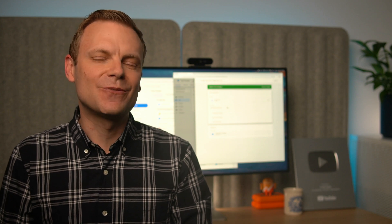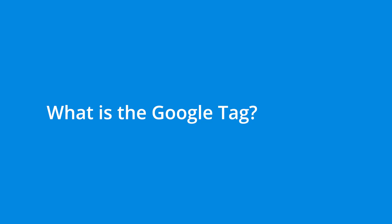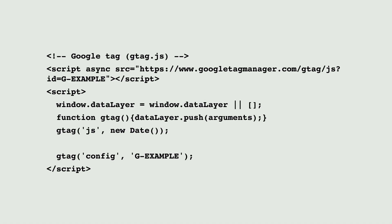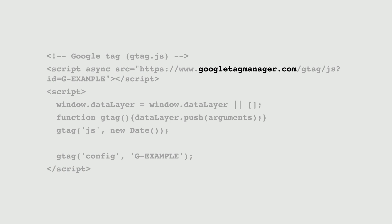Before we cover the different scenarios you might encounter, let's cover one of the biggest obstacles people face when migrating. This is understanding what the Google Tag is. The Google Tag can be confusing because it can refer to different things. The Google Tag can be the dedicated tag you use to install Google Analytics on your website. It looks something like this. It can be confusing because we can see the tag refers to googletagmanager.com, but this isn't actually the Google Tag Manager code.